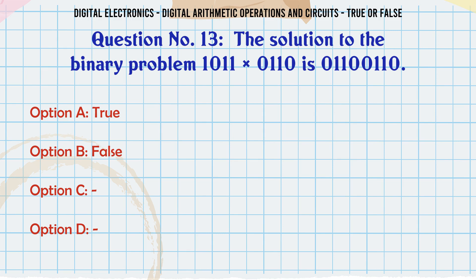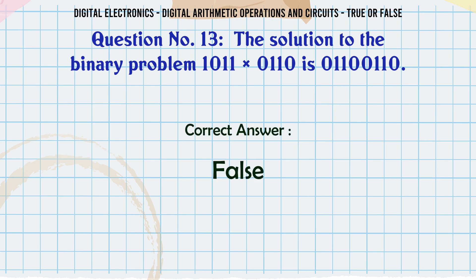The solution to the binary problem 1011 minus 0110 is 01100010. True or False? The correct answer is False.